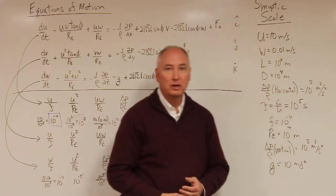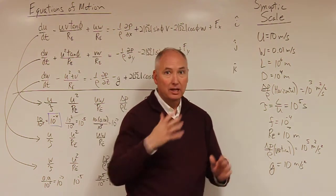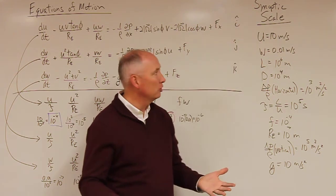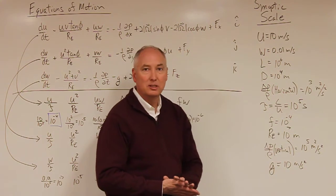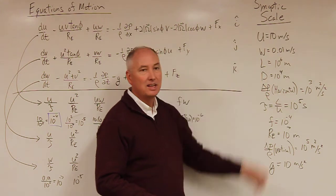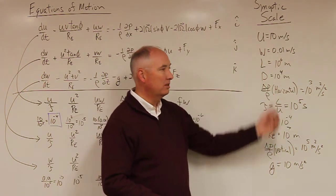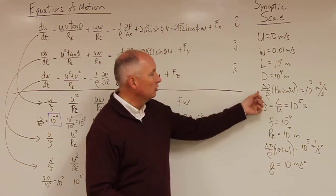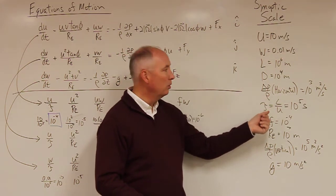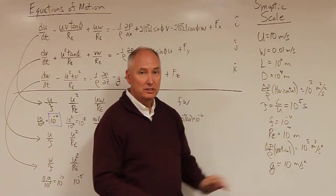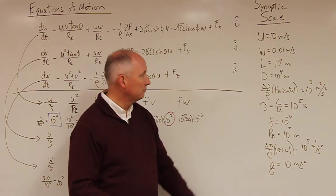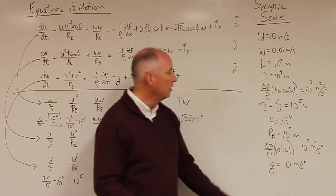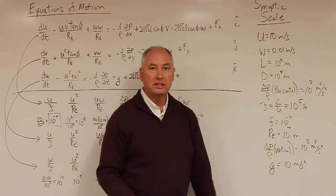We'll start with the synoptic scale — the scale of mid-latitude weather systems. At the synoptic scale, the horizontal wind speed is approximated as 10 meters per second, the vertical velocity is 1 centimeter per second (0.01 m/s), the length scale is 10 to the 6th meters, and the depth (the troposphere) is about 10 kilometers or 10 to the 4th meters. The horizontal pressure delta-p over rho is 10 to the 3rd. The time scale is length divided by velocity: 10 to the 6th over 10, giving 10 to the 5th. The Coriolis parameter f is 10 to the minus 4th.